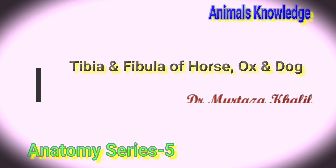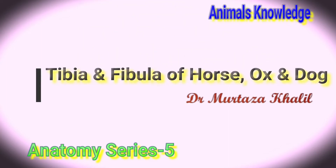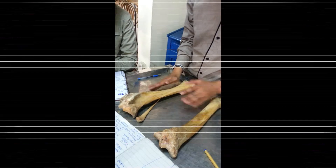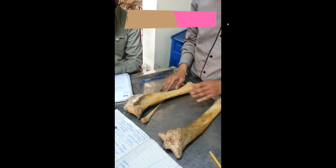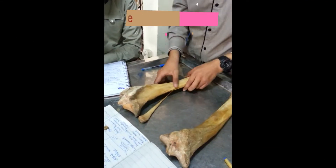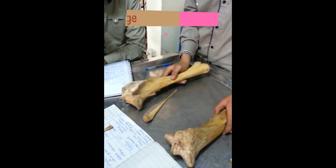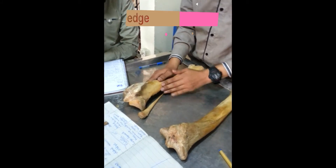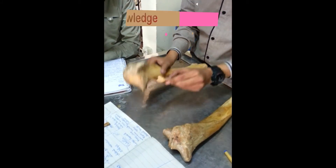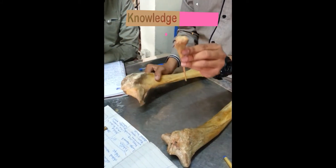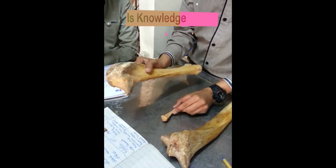Assalamu alaikum. I am Dr. Monsa Klir from Animals Knowledge, and this is a series for tibial students. We are looking at the horse and ox, and the tibia and fibula are both separate. This is fibula and this is tibia.